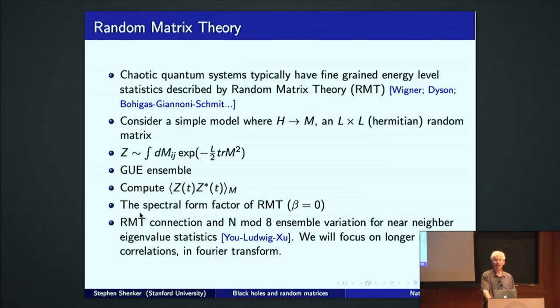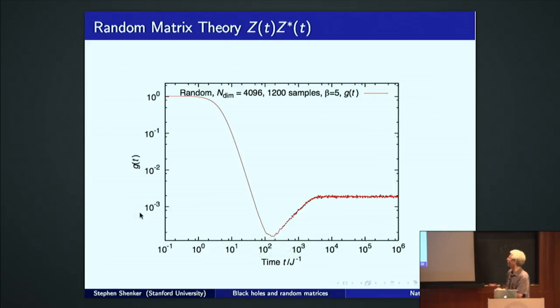All right. So now, without further ado, we could do analytic calculations. Brezan and Hikami have done a tour de force. It's easier for us since we're geared up. We just generated a large number of random Hermitian matrices. And here is the result of that numerical calculation.